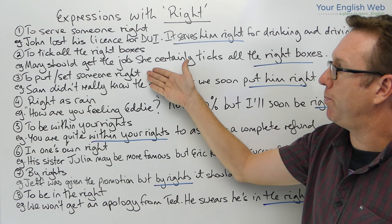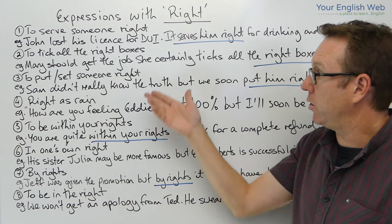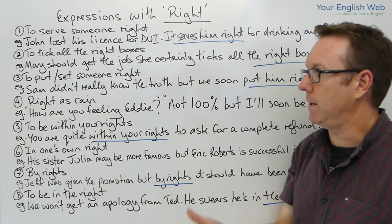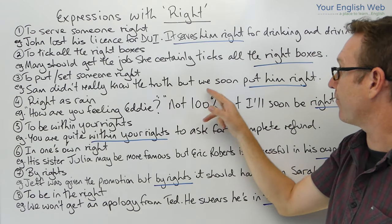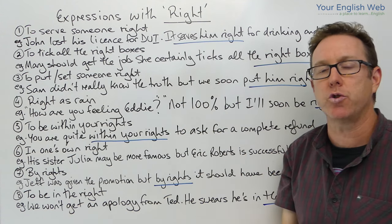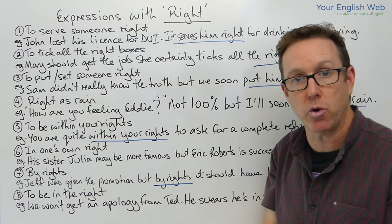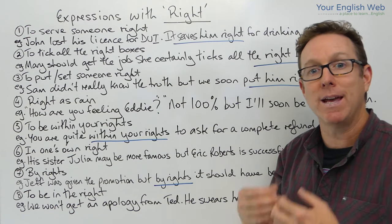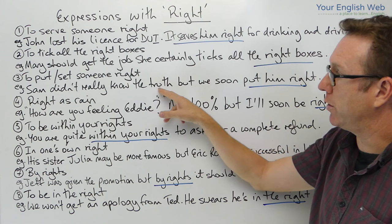The third expression is 'to put or set someone right' — you can also say 'set someone straight', but here we're using 'right' with the same meaning. Example: Sam didn't really know the truth, but we soon put him right. This means we told him the truth, so now he no longer has the confusion or doubts he had before.